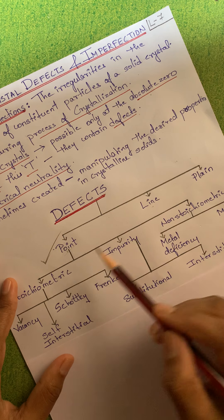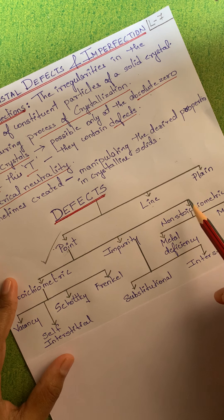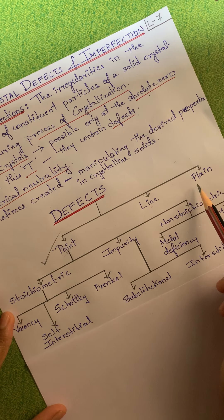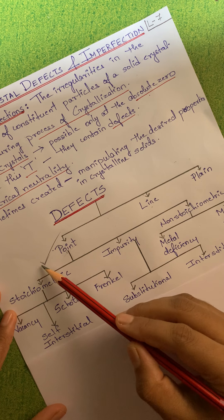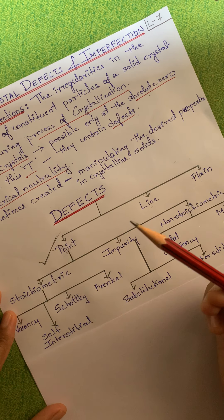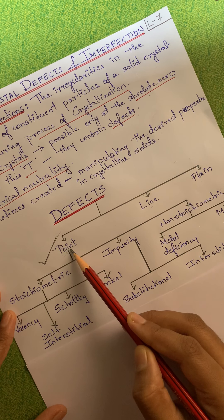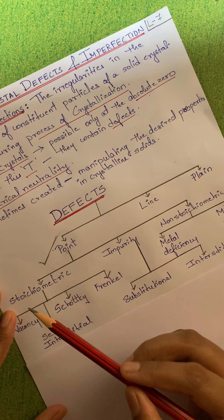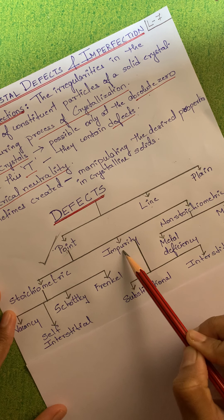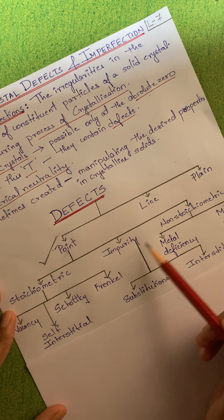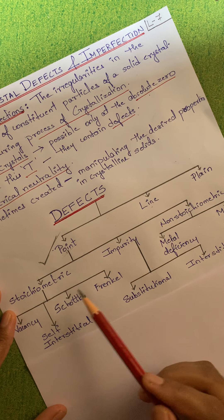Sometimes we deliberately create defects in crystalline solids to give them certain properties. A simple example is alloys — when we want to form alloys, we add some impurity. That is nothing but creating defects in a crystal. So defects can also be useful.